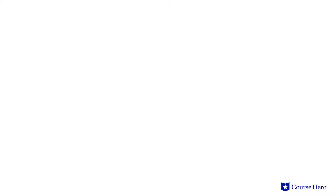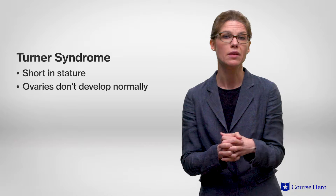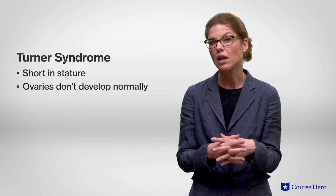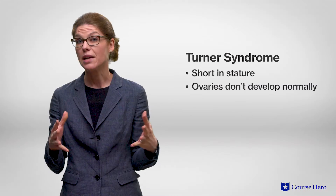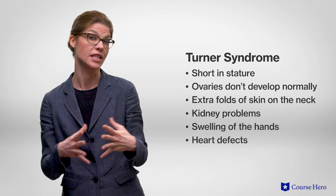Turner syndrome is another chromosomal disorder that occurs from nondisjunction during meiosis. Normally, people have two sex chromosomes — males have an X and a Y chromosome, whereas females have two X chromosomes. In Turner syndrome, the female receives only one X chromosome. The missing X chromosome impacts development before and after birth. Females with Turner syndrome are often short in stature and the ovaries don't develop normally, which usually results in them being infertile. Other symptoms may include extra folds of skin on the neck, kidney problems, swelling of the hands, and heart defects.